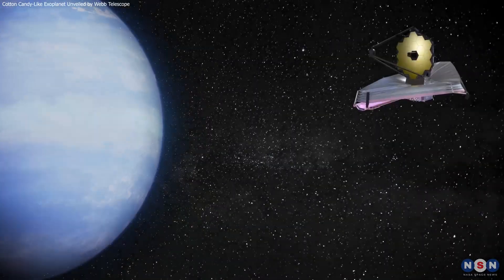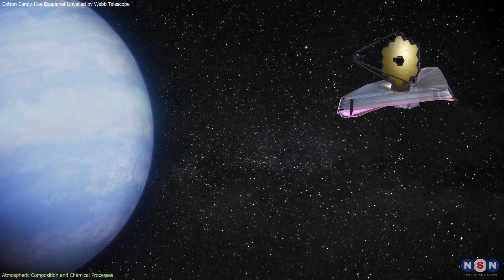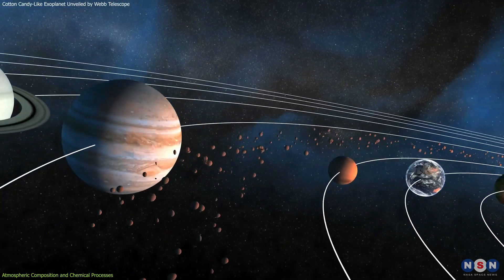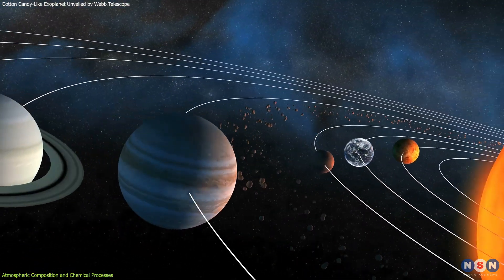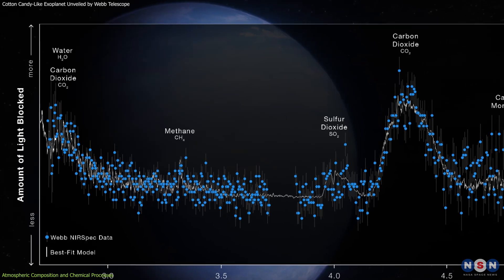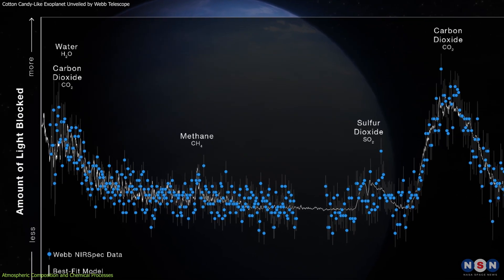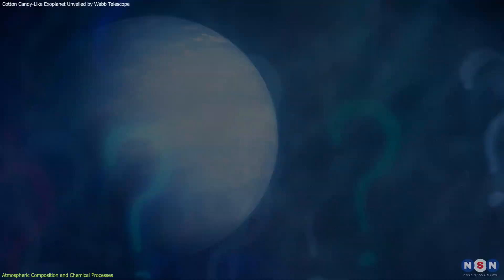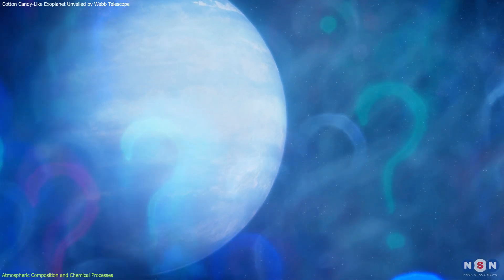The atmosphere of WASP-107b, as observed by Webb, is markedly different from those of similar planets in our solar system. The low levels of methane, a common component in the atmospheres of gas giants like Jupiter and Saturn, raise questions about the chemical processes at work.